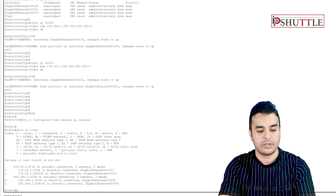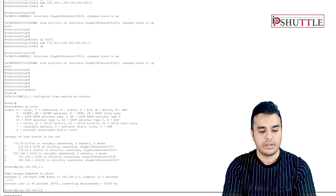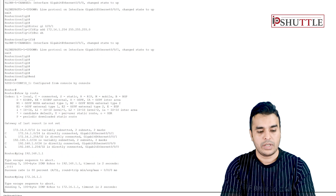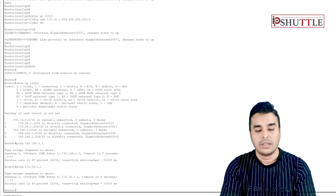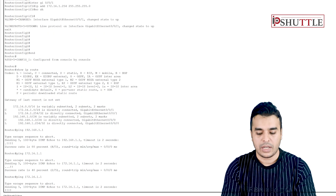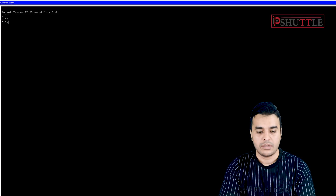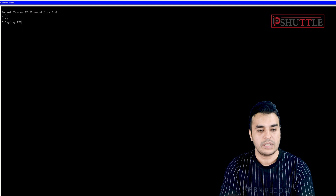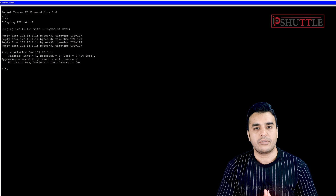Pinging 192.168.1.1 from the router — we have a reply. Pinging 172.16.1.1 — it takes a moment to resolve but we get a reply. Going back to the PC and pinging 172.16.1.1 — we have the reply. This is how we configure inter-VLAN routing using routed interfaces.